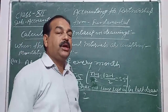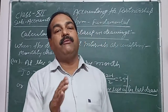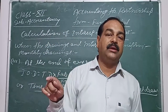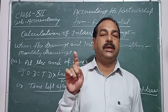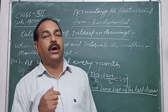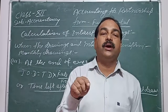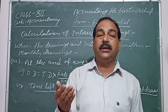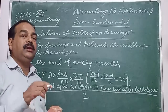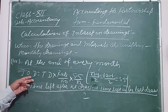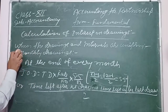To summarize monthly drawings: beginning of every month → take 6.5 months; middle of every month → take 6 months; end of every month → take 5.5 months. Now we will talk about quarterly drawings.